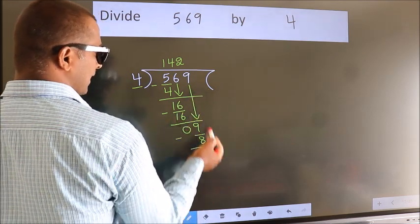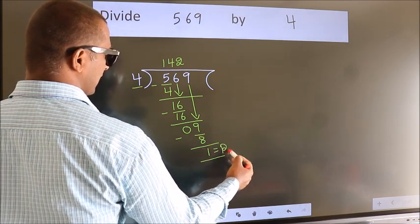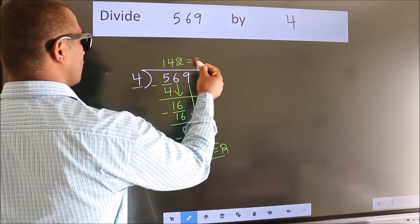No more numbers to bring it down. So we stop here. This is our remainder. This is our quotient.